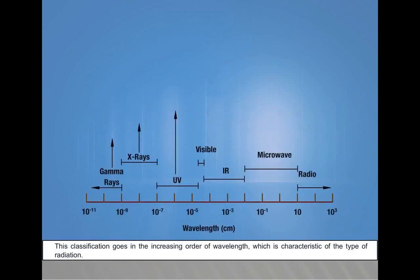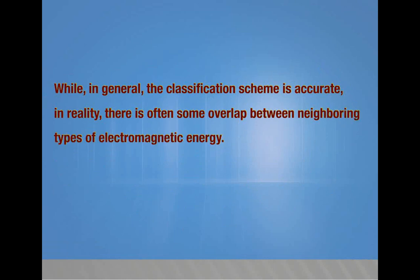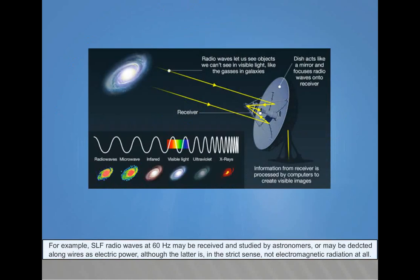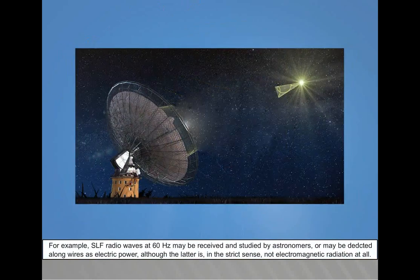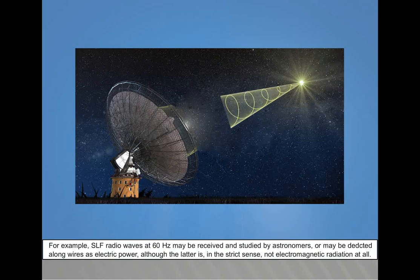This classification goes in the increasing order of wavelength, which is characteristic of the type of radiation. While, in general, the classification scheme is accurate, in reality there is often some overlap between neighboring types of electromagnetic energy. For example, SLF radio waves at 60 Hz may be received and studied by astronomers or may be conducted along wires as electric power, although the latter is, in the strict sense, not electromagnetic radiation at all.